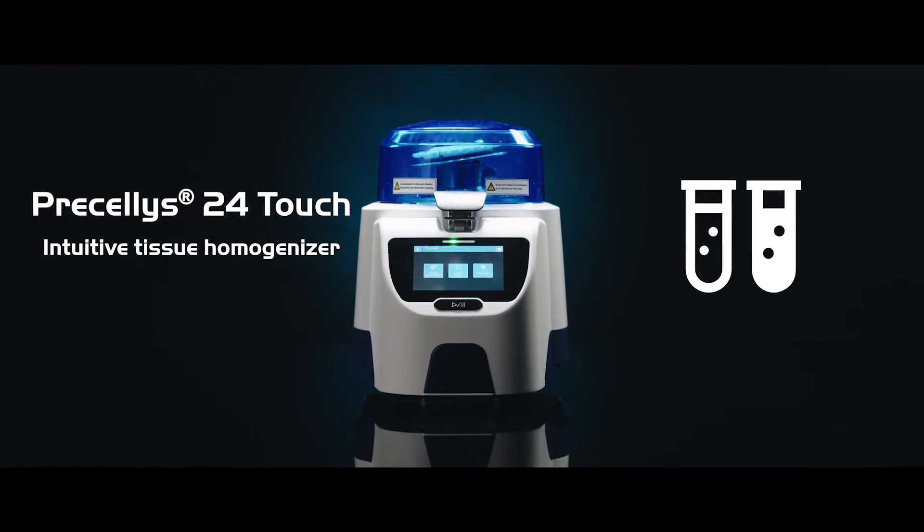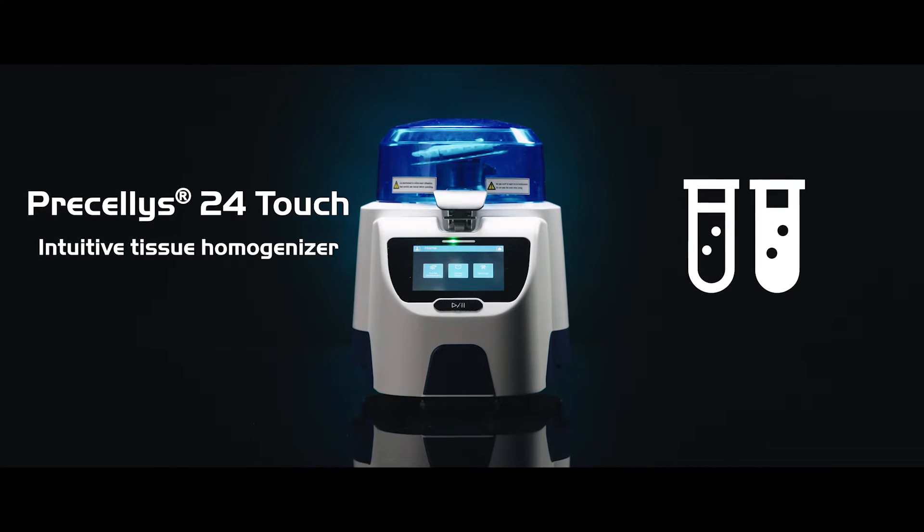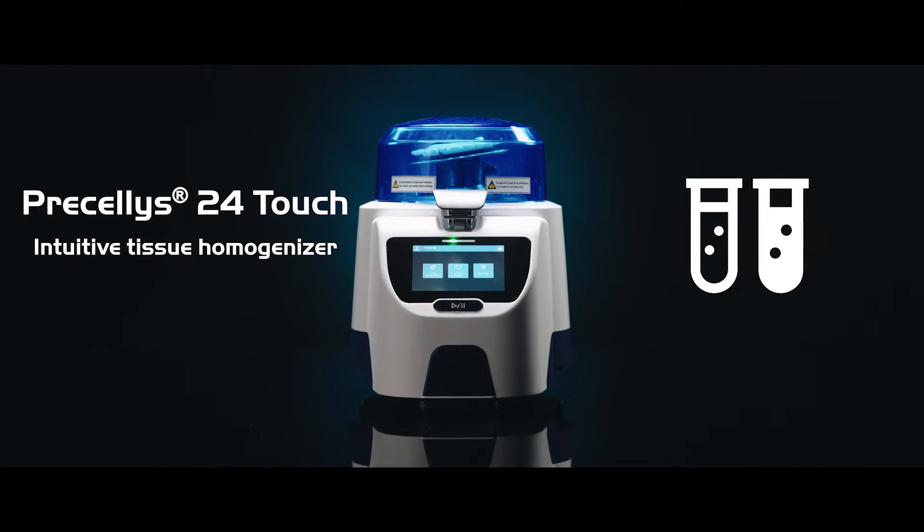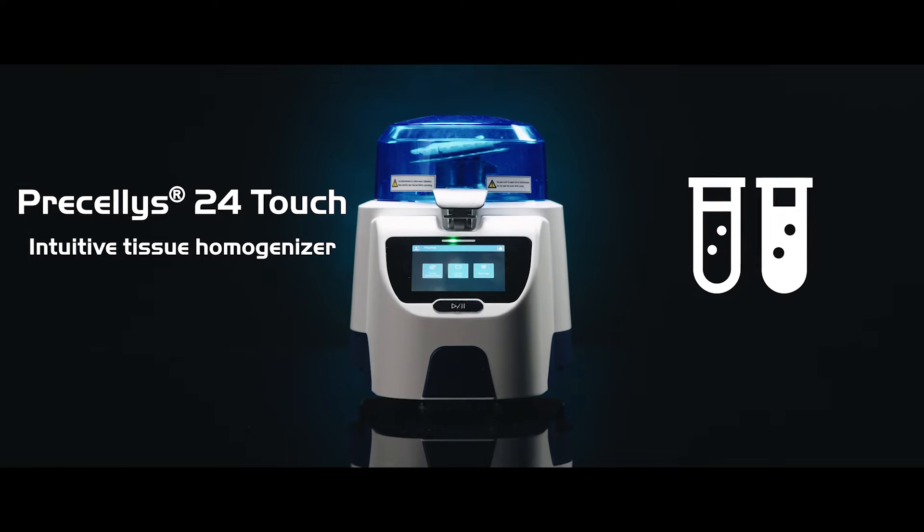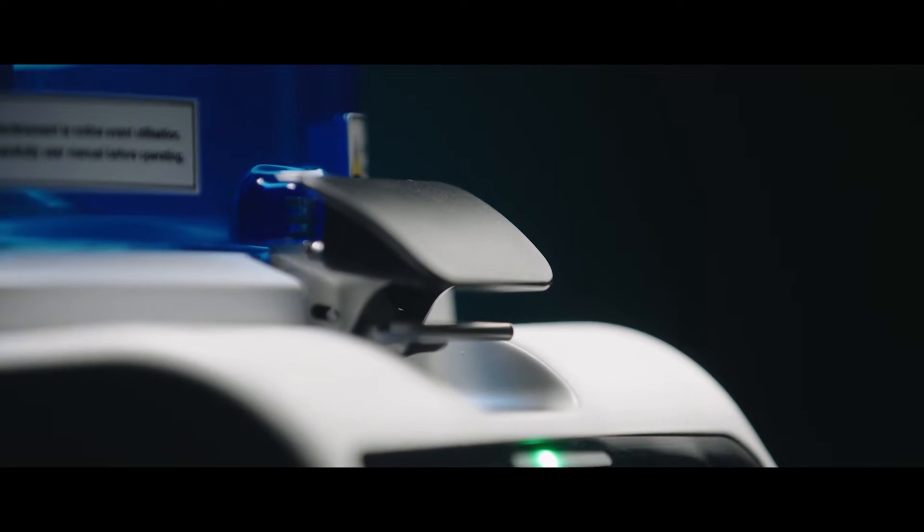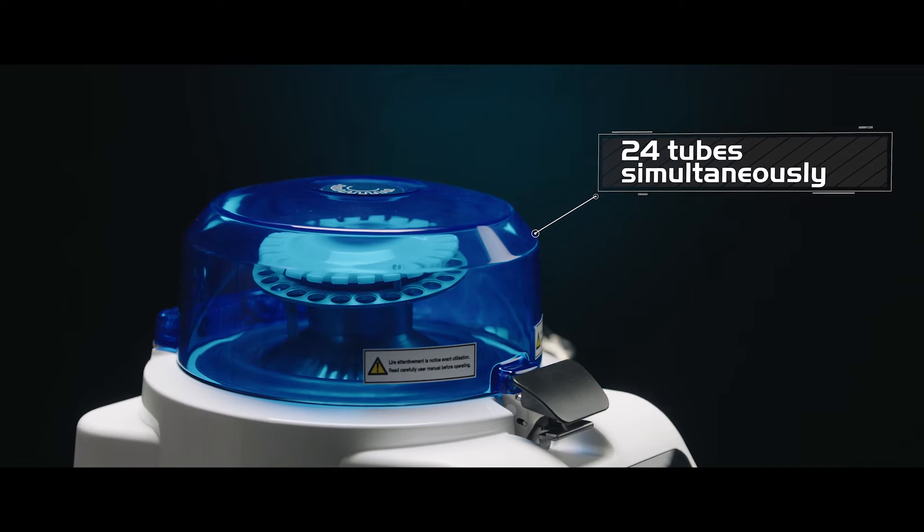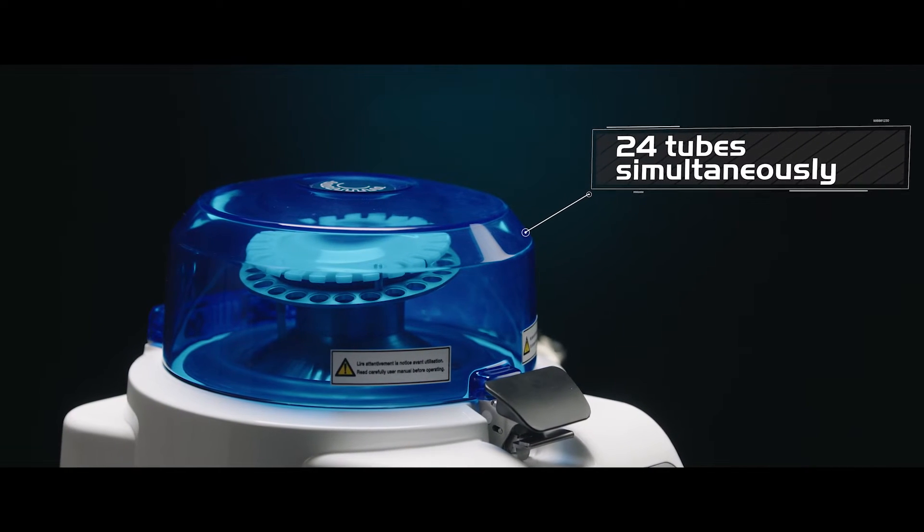Precelas 24 Touch is an intuitive tissue homogenizer for your sample preparation before analysis. Efficient Precelas 24 Touch has the capability to process up to 24 tubes simultaneously.